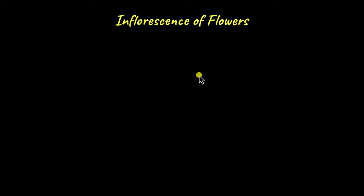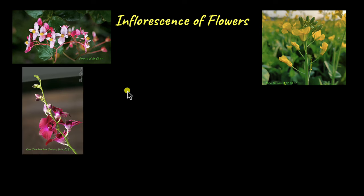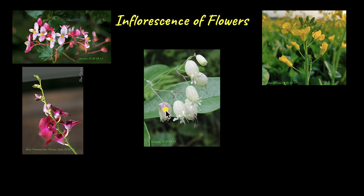When you look at flowers in trees, have you wondered if there is any pattern in how the flowers are arranged? Take a look at these flowers. We have begonia, mustard, orchid, and this funny looking flower over here is called bladder campion. Do you see any similarities or differences in how the flowers are arranged in these plants?